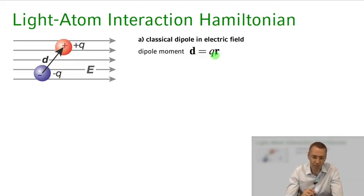When we expose such a classical dipole moment to an electric field, we have an interaction energy of this dipole moment with this external electric field. This dipole interaction energy, that's just the scalar product of the dipole moment times the electric field at the position of the dipole moment. So this would be the dipole interaction energy.